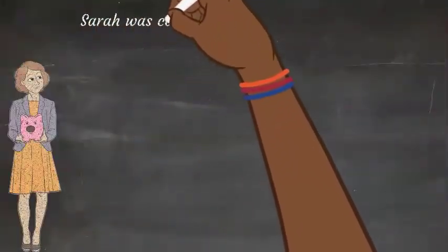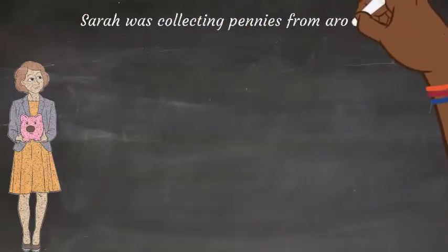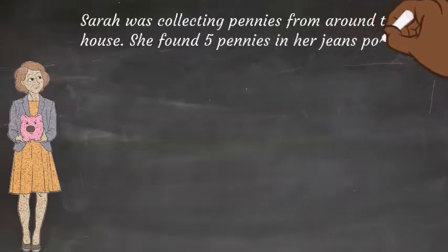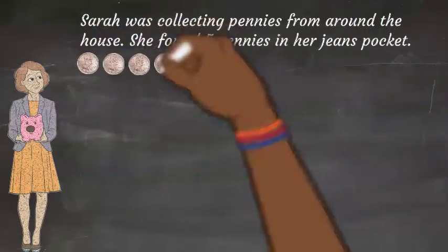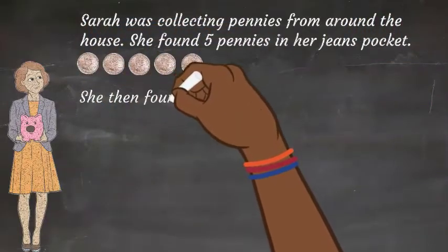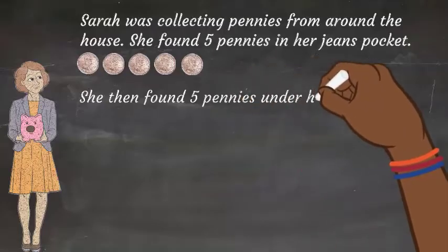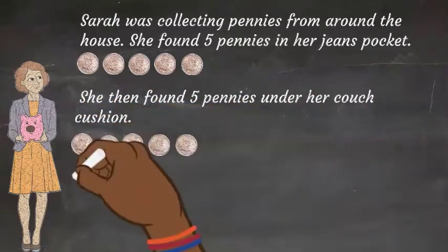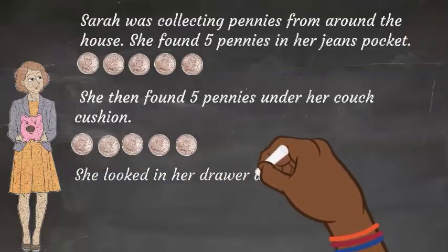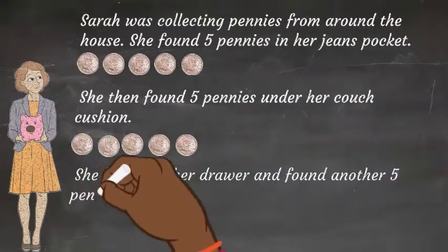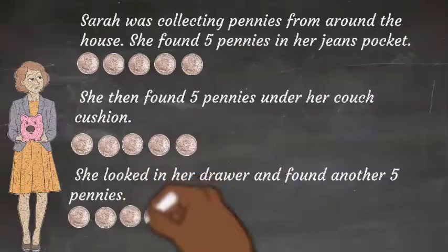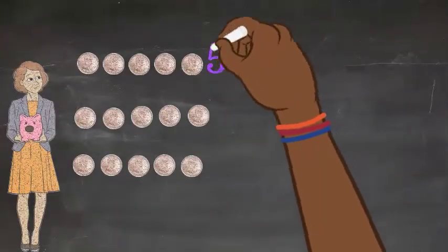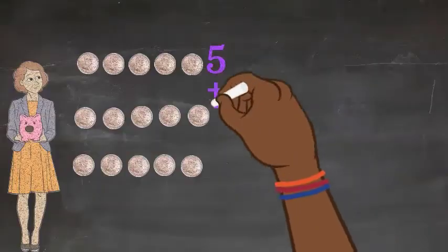This is Sarah. She was collecting pennies from around the house. She found 5 pennies in her jeans pocket: 1, 2, 3, 4, 5. She kept looking. She then found 5 pennies under her couch cushion. She looked some more and found 5 more pennies in her drawer. So here are the 5 pennies — 5 plus 5 plus 5.